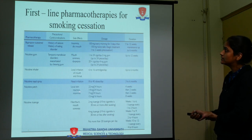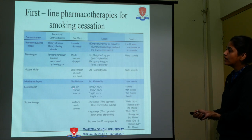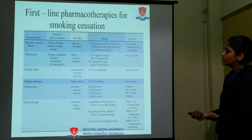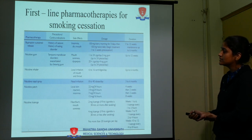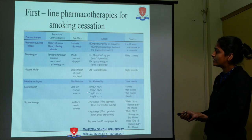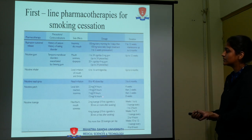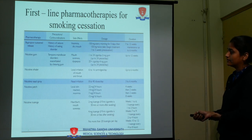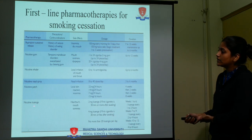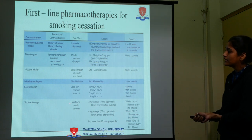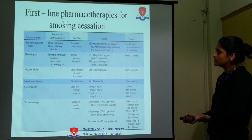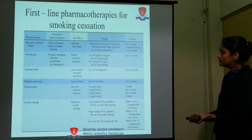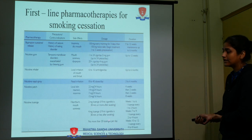Nicotine patch side effects include local skin reaction and insomnia. Doses are 22 mg per 24 hours, 14 mg per 24 hours, 7 mg per 24 hours, and 15 mg per 16 hours, with durations of 4 weeks, then 2 weeks, then 2 weeks, then 8 weeks. Nicotine lozenge side effects include heartburn and mouth soreness. Doses are 2 mg or 4 mg lozenge, with no more than 20 lozenges per day.